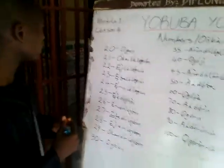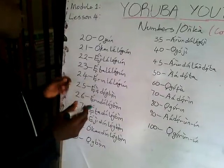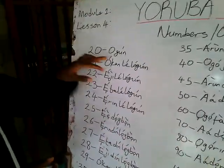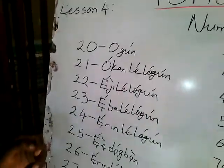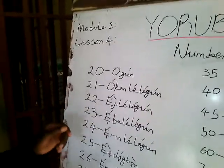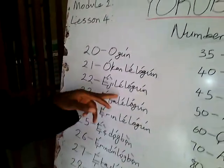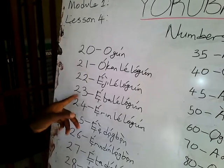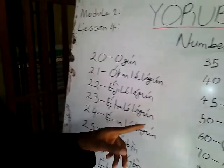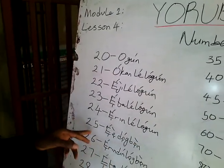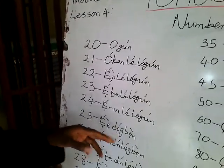In the last class we have 20 as Ogun. Then 21 is Okon Lelogun, 22 is Eji Lelogun, 23 is Eta Lelogun, 24 is Erin Lelogun, and 25 is Edoogun.